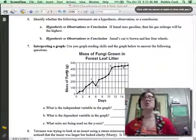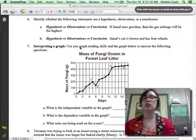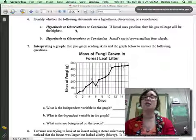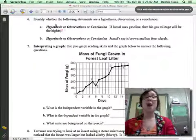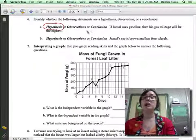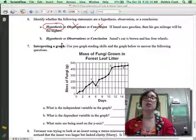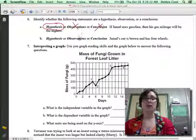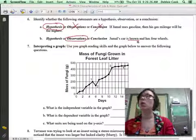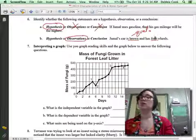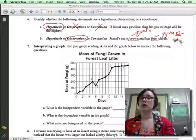Let's move on to the back. For number six, you had to prove that you understood the difference between a hypothesis, observation, and a conclusion. So it says, if Jamal uses gasoline, then his gas mileage will be the highest. Is that a hypothesis, an observation, or a conclusion? That's a hypothesis. He's making an educated guess. We don't know because he hasn't done the experiment yet, so it can't be a conclusion. And it's not an observation because he's not observing anything. So that doesn't work for us. Let's look at B. Is it a hypothesis, an observation, or a conclusion? Jamal's car is brown and has four wheels. That's an observation. Question for you. If I said his car was brown, is that qualitative or quantitative? It's qualitative. What if I said it had four wheels? It's quantitative. How do you know the difference? Yeah, because it has a number. And what does N stand for? Stands for numbers. Very nice.